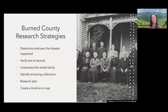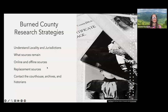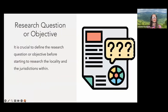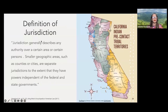There are a lot of strategies you can use. Determine what year the disaster happened and verify the loss of records. Understand the entire family — use the friends, associates, and neighbors method. Look at all the siblings of your person of interest, the parents, any children of siblings, and any neighbors. Identify all remaining collections online or offline using the FamilySearch catalog, historical societies in the county, state archives, digital archives, and the state library.